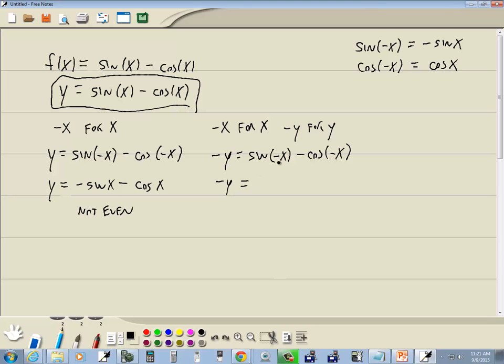Again, the sin of negative x, take the negative and put it out in front. So we've got negative sin(x) minus, and this just automatically becomes positive because cosine is an even function.